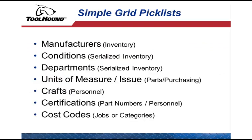Simple grid pick lists are used for the following data: manufacturers, conditions of inventory, departments or internal owners of tools and equipment, units of measure and issue, crafts or trades associated with personnel, certifications or trainings required to use inventory, and cost codes used with either jobs or categories.